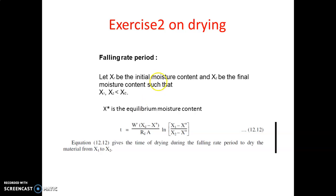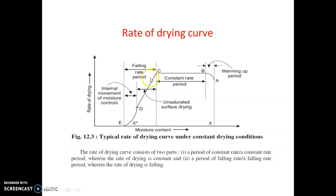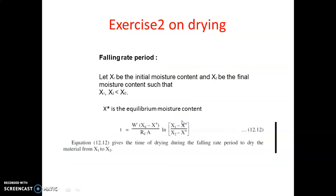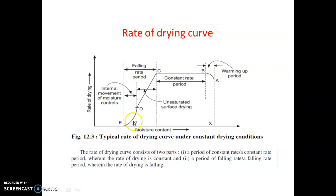Let x1 be the initial moisture content and x2 be the final moisture content, such that x1 and x2 are less than xc — that means x1 may be here and x2 may be here on the curve. And x_star is the equilibrium moisture content, also known as the limiting moisture content, represented as x_star.